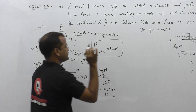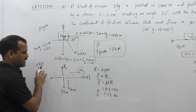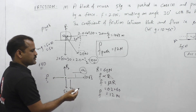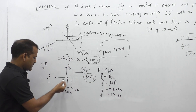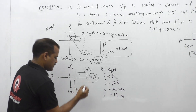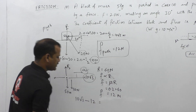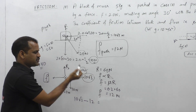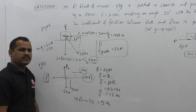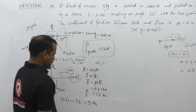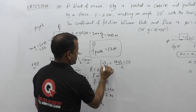Now finding acceleration A1 in the pushing case by applying horizontal equilibrium: the net force is 10√3 minus the frictional force 12N, which drives the object rightward. So: 5 × A1 = 10√3 − 12, giving A1 = (10√3 − 12) / 5.